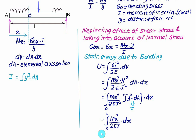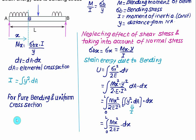This is the generalized equation applicable for variable cross-sections as well as variable bending moment, since M_X, E, and I are not taken as constants. If the bending moment remains constant and I remains constant — the case of pure bending with uniform cross-section — we can take M_X² and 2E outside the integral. The strain energy in pure bending becomes U = M²L divided by 2EI.